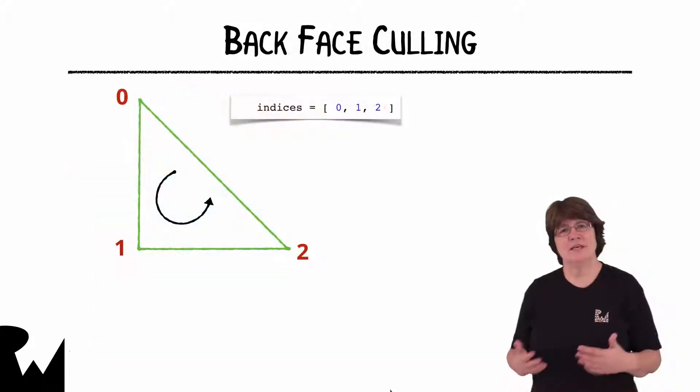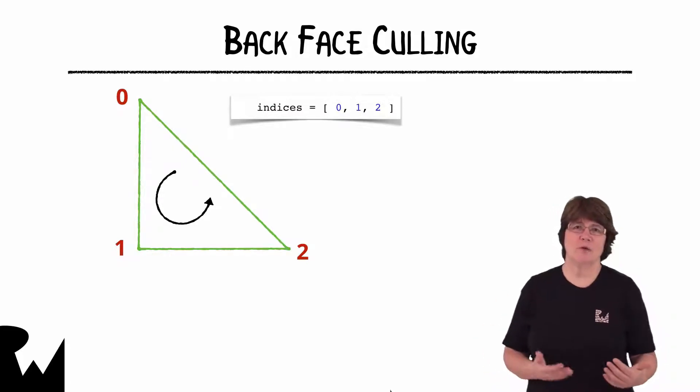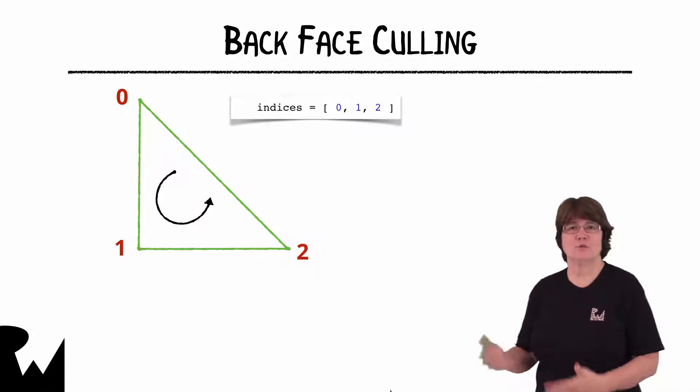And we can do this with something called backface culling. We can tell the render command encoder to cull back faces, but we also need to tell the command encoder which way our triangles are facing. Have a look at this triangle and the indices array. The vertices are in counterclockwise order. The triangle is made up of vertex 0, 1 and 2 in that order. And the triangle is facing towards us.